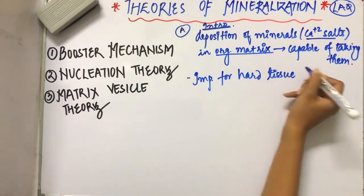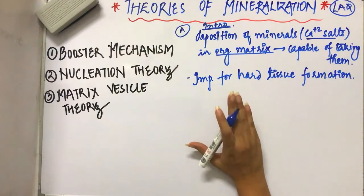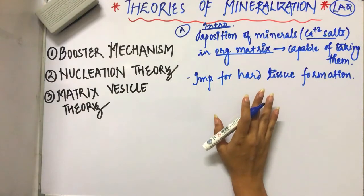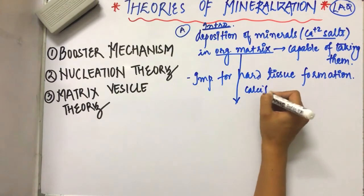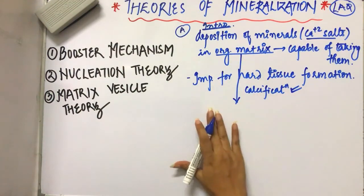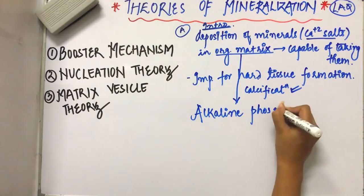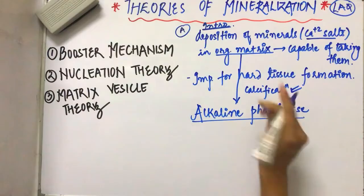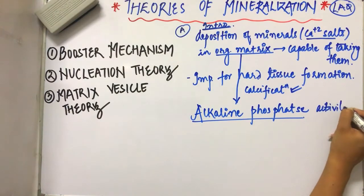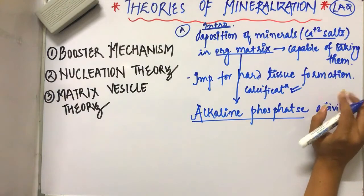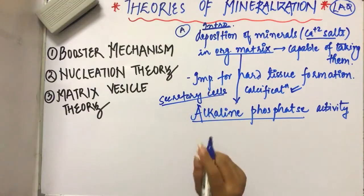Okay, next is calcifiable organic matrix, in which there is alkaline phosphatase activity. Now, the organic matrix is defined as that in which calcification is possible. This has alkaline phosphatase enzyme or alkaline phosphatase activity. So this is an organic matrix which has alkaline phosphatase activity. That is the calcifiable organic matrix. It is laid down and secreted by secretory cells like ameloblasts.